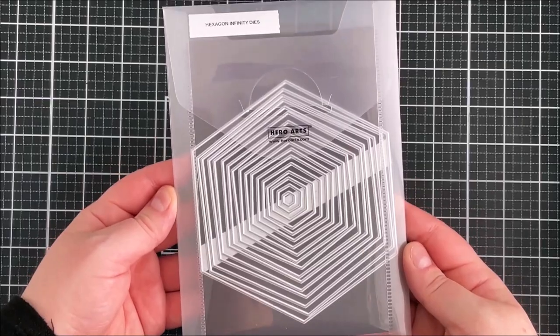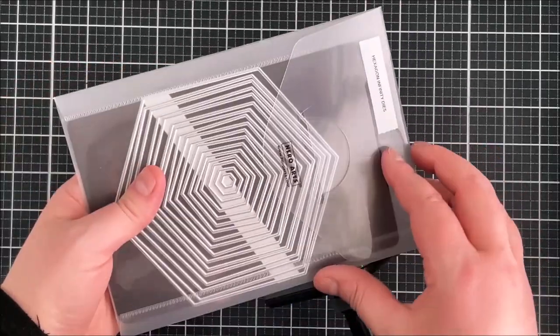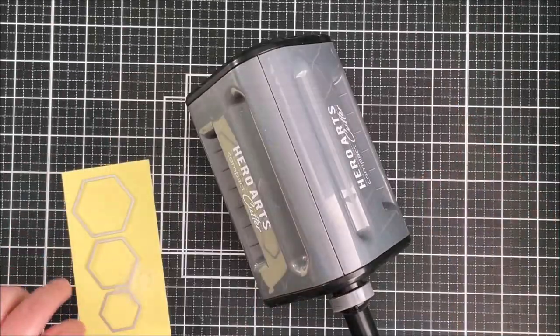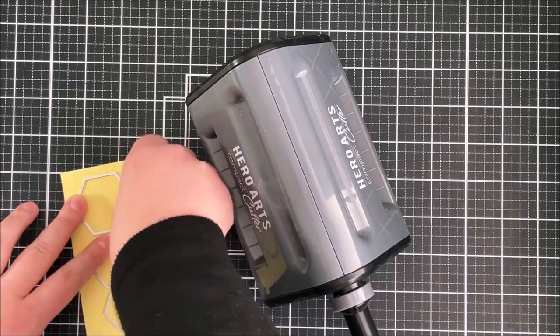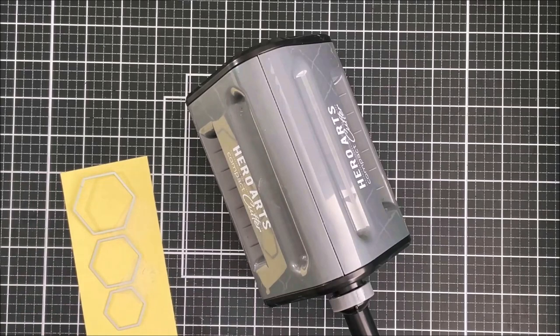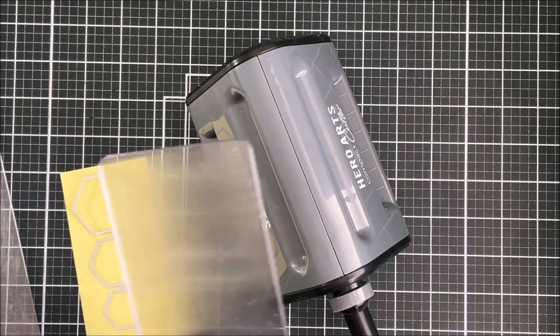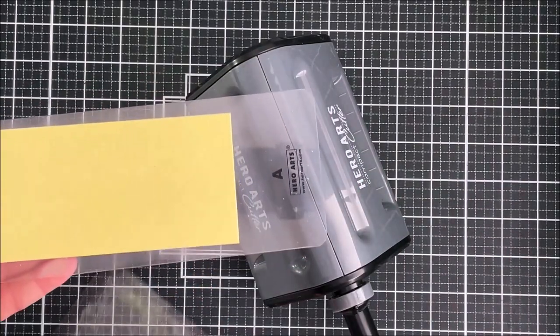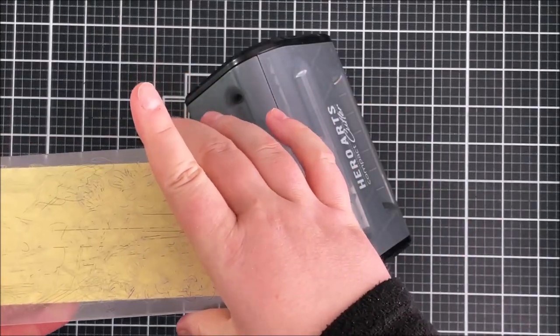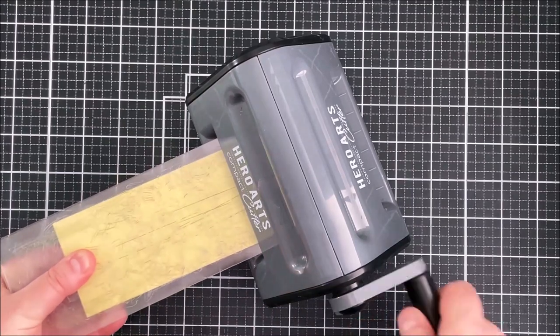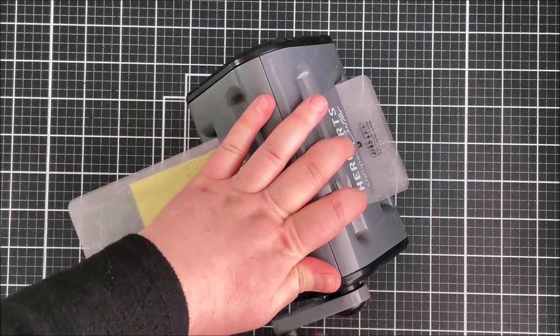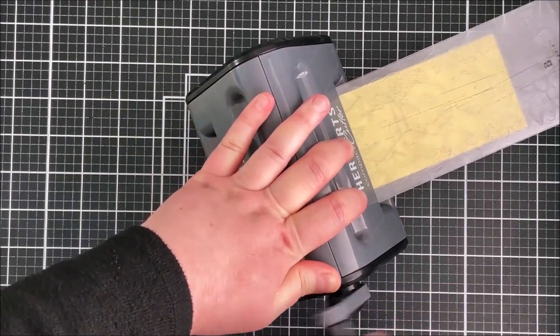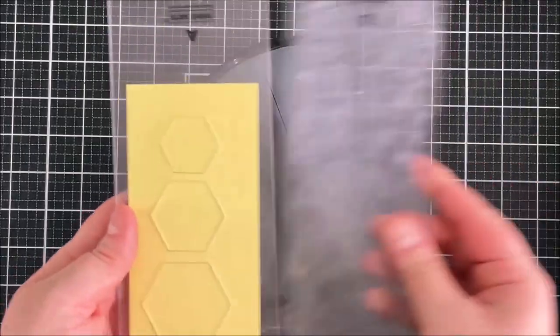I'm taking three sizes of the hexagon infinity dies and I'm going to cut them from canary cardstock. I'm taping them down with some low tack tape and then running them through the Hero compact cutter. This is such a cute little die cutting machine, I absolutely love it. I've placed the dies with the cutting side up and although this machine is more of a compact cutter, you actually can fit quite large dies in it. It cuts beautifully.